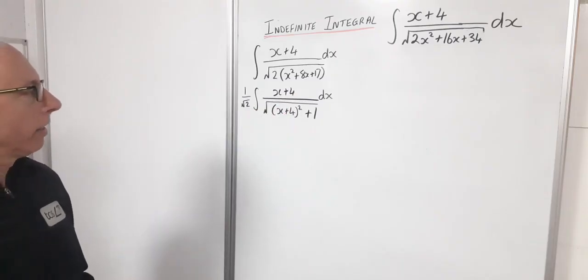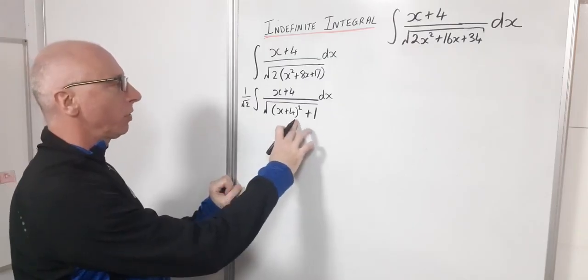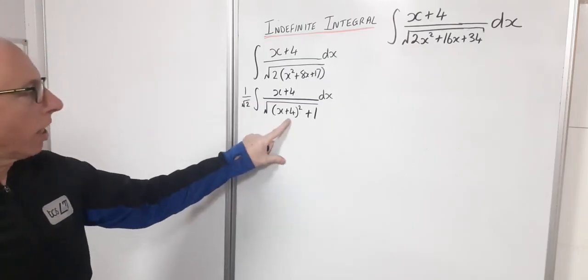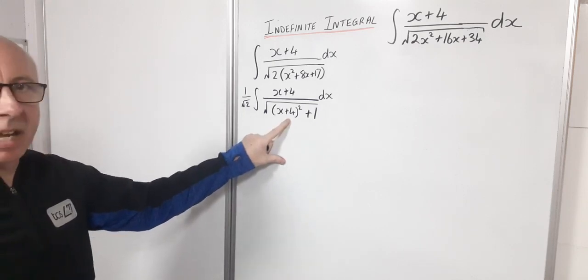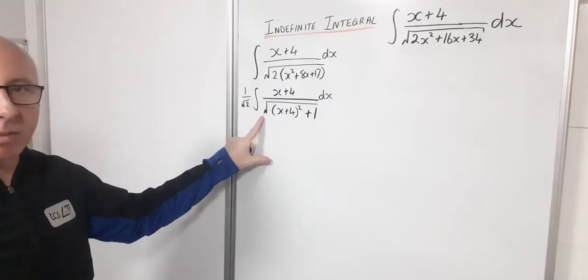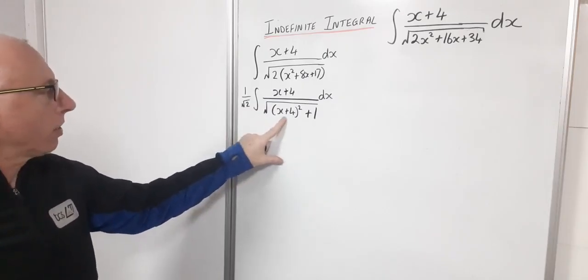Okay so now I've got the x plus 4 and the x plus 4. So now I've come to a bit of an end of what I can do without the u substitution. Now let's try something different here because I've got x plus 4 squared plus 1. Now that looks like if I can get a trig substitution in there I may be able to get this radical outside, away from this integral.